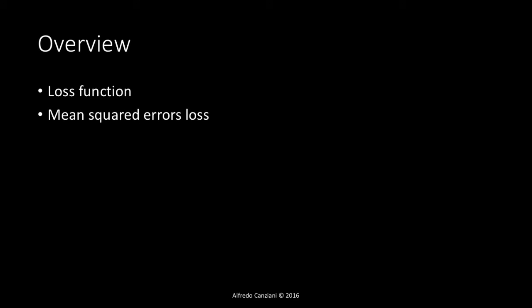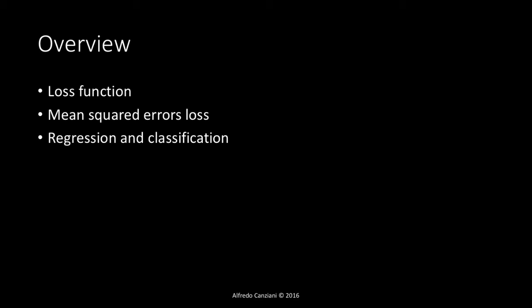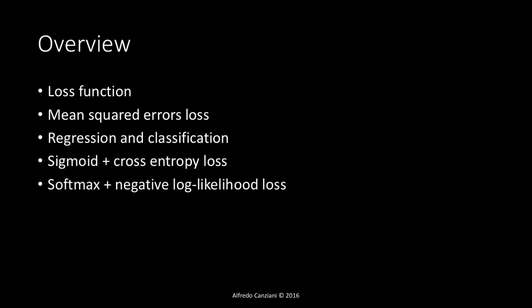We will revisit the mean square error loss function, and discuss how we can use it for regression and for classification — and we will see the drawbacks of using MSE for classification. Then we will introduce the sigmoid plus cross entropy loss function for classification tasks, and eventually the softmax plus negative log likelihood loss, which is similar but adds the assumption that the output of the network is a conditional class probability defined across the classes.